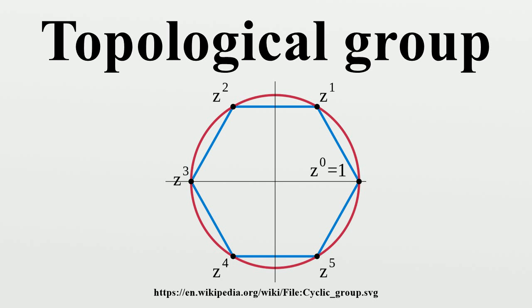The inversion operation on a topological group G is a homeomorphism from G to itself. Likewise, if a is any element of G, then left or right multiplication by a yields homeomorphisms G to G.